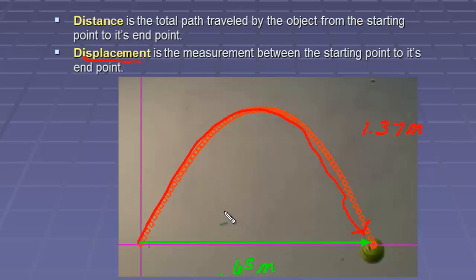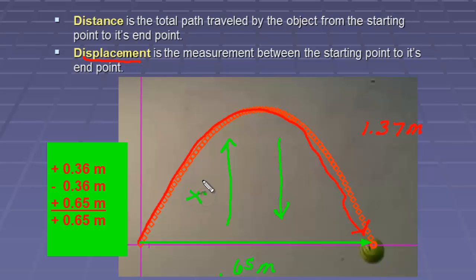Well, that .65 meters includes direction. And in direction, we had the tennis ball going up as well as coming back down. This up motion was a positive .36 meters. And then we had a negative .36 meters.